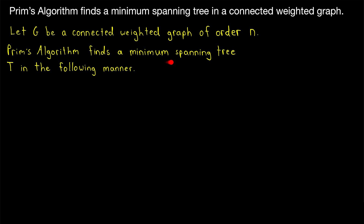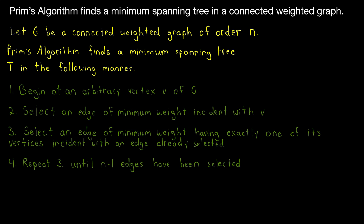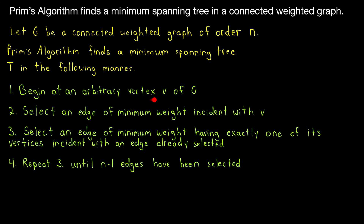Prim's algorithm finds a minimum spanning tree of G, which we can call T, in the following manner. We begin at an arbitrary vertex, say V, of G. Since we're creating a spanning tree, by definition, every vertex of G will be in our spanning tree. This algorithm is going to pick out the edges that minimize the total weight or cost. After we have picked an arbitrary vertex V, step two is to select an edge of minimum weight that is incident with V. This will be the first edge of our spanning tree T.